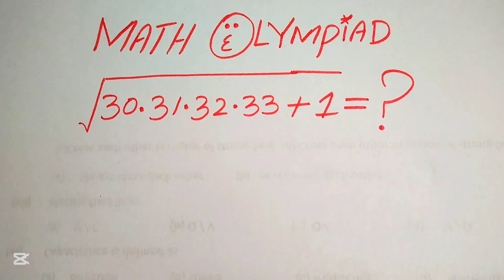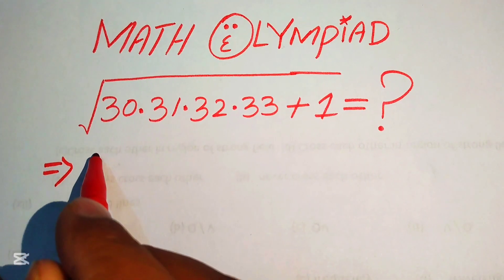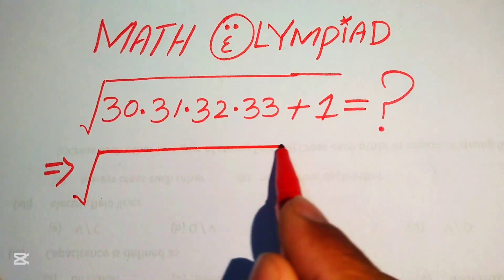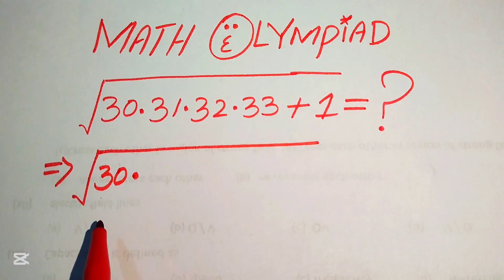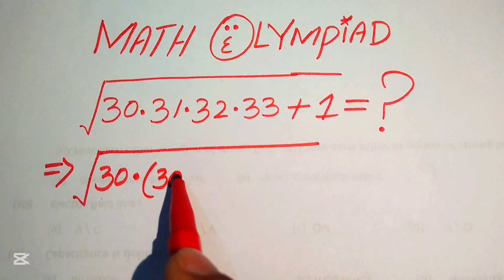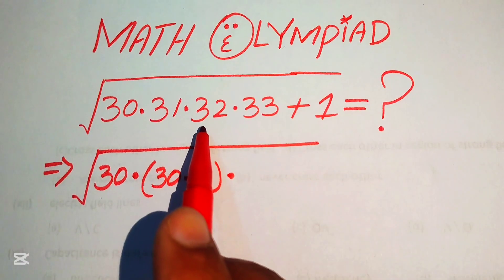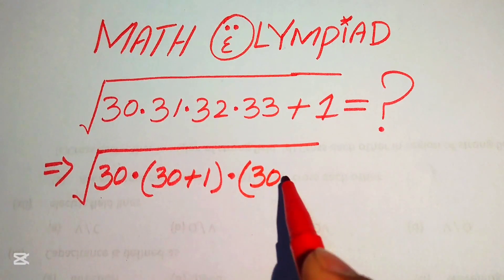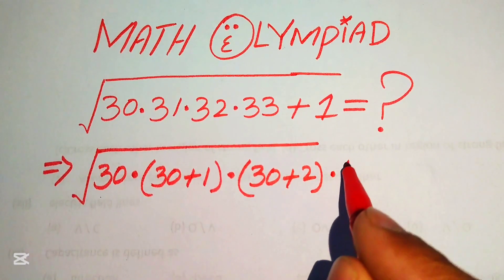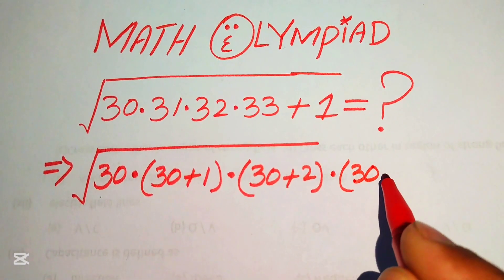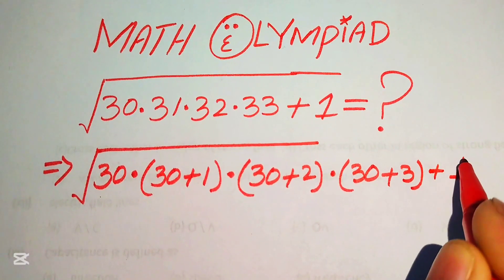The very first step is to simplify the expression inside the square root. We rewrite the algebraic expression: 30 multiplied by 31, which we write as 30 plus 1; multiplied by 32, written as 30 plus 2; multiplied by 33, written as 30 plus 3; and then plus 1.